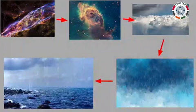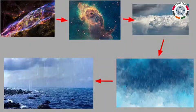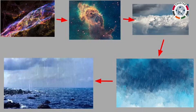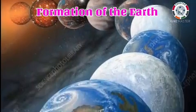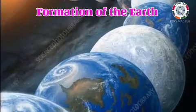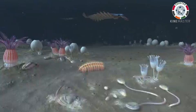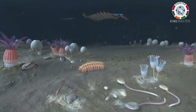The hot gases turned into clouds. These clouds caused rain. The rainwater collected on the ground and formed oceans. Hence, the temperature of the Earth became stable. Due to these conditions, life began to appear on the Earth.